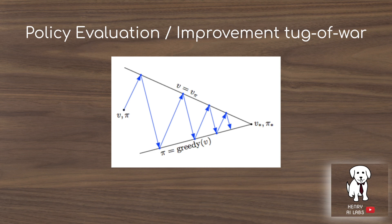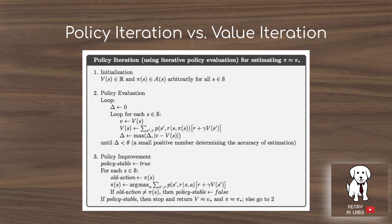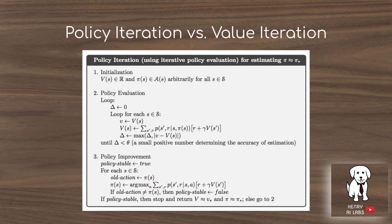We'll conclude discussing generalized policy iteration with a couple of interesting characteristics. There is a tug of war between evaluation and improvement: every time we evaluate the policy and update value functions, the policy is no longer greedy; and every time we make the policy greedy with respect to the value function, the value function estimate is no longer correct. There is also an important distinction between policy iteration — looping through evaluations until hitting a delta threshold — and value iteration, where only one pass through the value update is made, though the book provides convergence guarantees for why value iteration still works within the GPI framework.